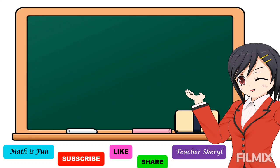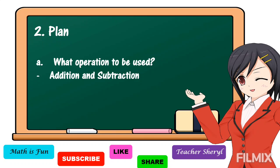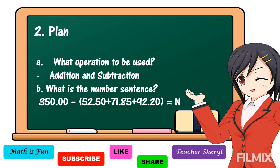After understanding the problem, next we're going to make a plan. We should know what operation to use. In our problem, we're going to use addition and subtraction. Our number sentence is: 350 pesos minus (52 pesos and 50 centavos plus 71 pesos and 85 centavos plus 92 pesos and 20 centavos) is equal to N.